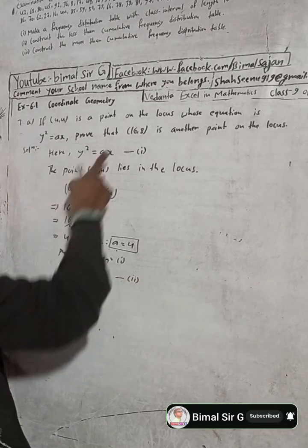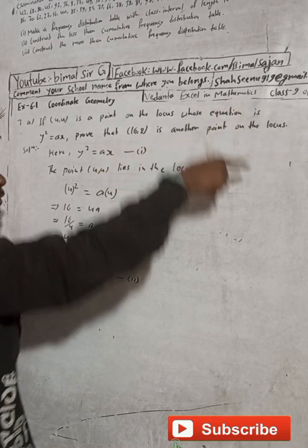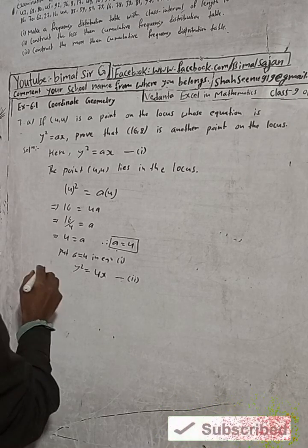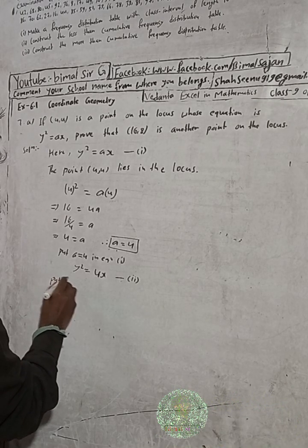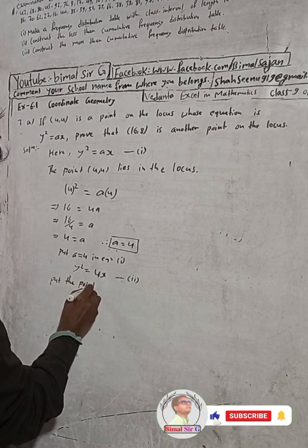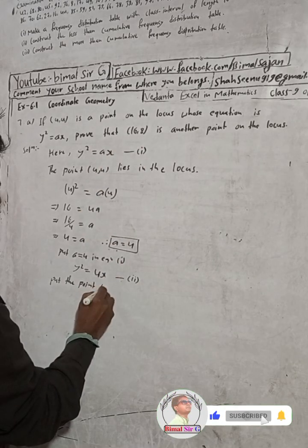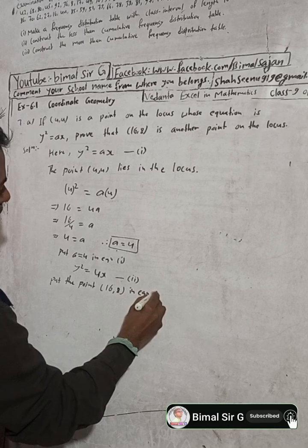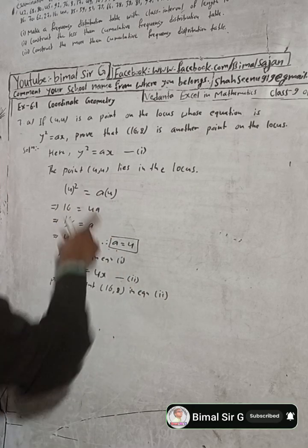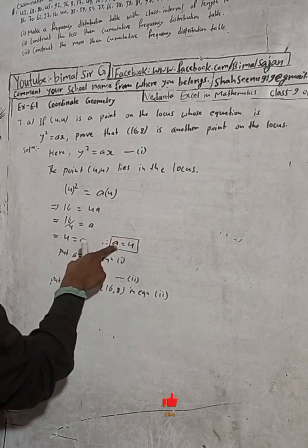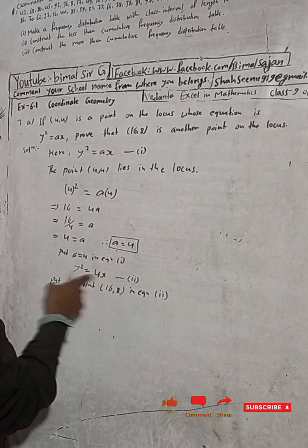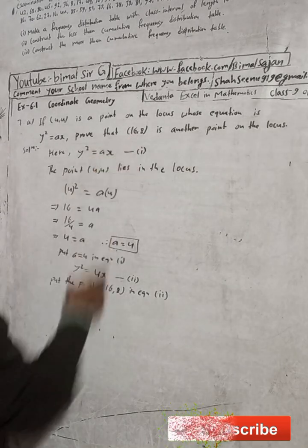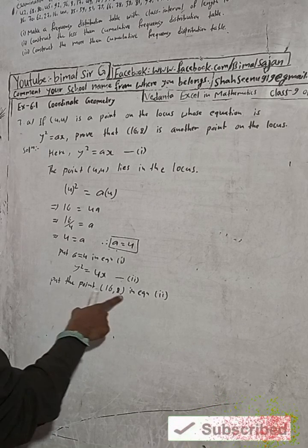Now we have to prove that (16, 8) is another point on the locus. To prove this, we put the point (16, 8) in equation 2.